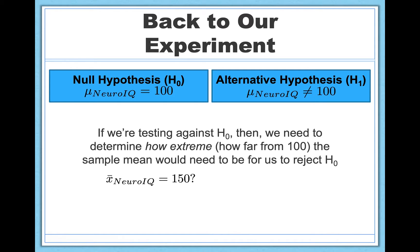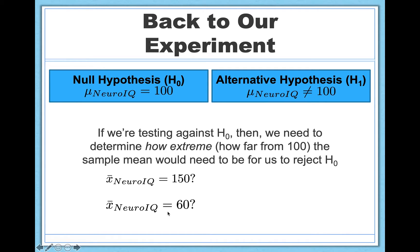In some cases this is really clear cut. For example, if you did this study and you found an average IQ of 150 after taking neuro IQ, well that's pretty good evidence that neuro IQ is changing people's IQ scores. It's very unlikely that you just happened to collect a sample of 15 people who had an average IQ of 150 — that would be absurd and very unlikely. So it's much more likely to say neuro IQ is actually effective. You can also observe a result in the opposite direction — you could give people neuro IQ for 30 days and find that it really decreased their IQ scores by a significant amount, all the way down to 60. In these cases the decision would be very easy.